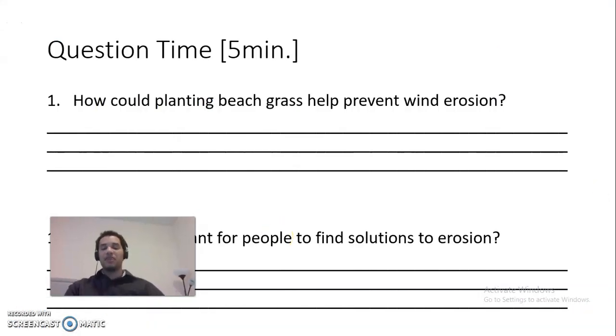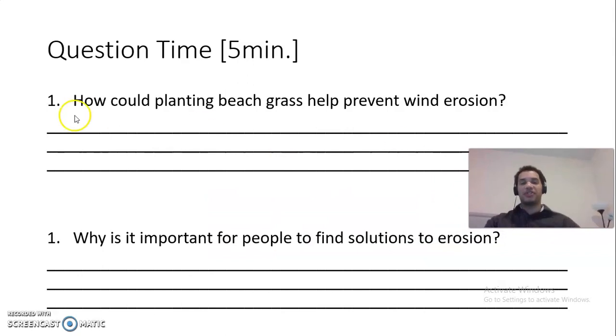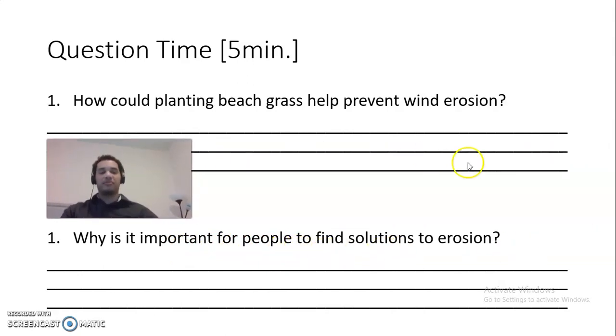Okay, we got some more questions. So this will be on Seesaw. Number one, it says how could planting beach grass help prevent wind erosion? Also, why is it important for people to find solutions to erosion? Why is that important? Please let me know.